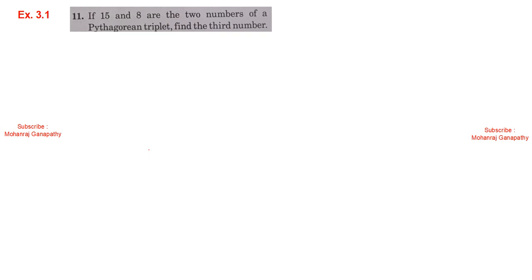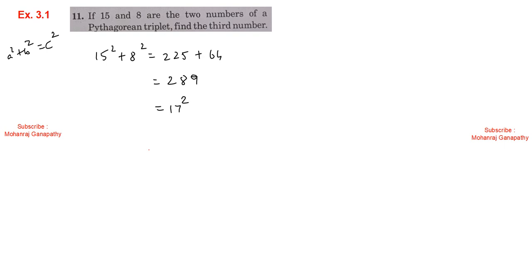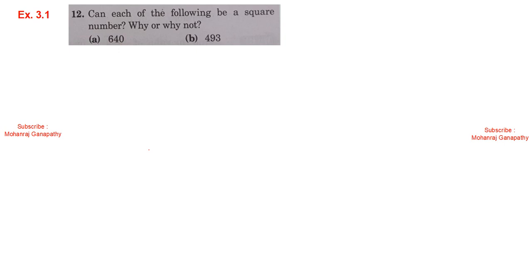Exercise 3.1, sum number 11: 15 and 8 are two numbers of a Pythagorean triplet. Find the third number. Using a squared plus b squared equals c squared: 15 squared plus 8 squared equals 225 plus 64 equals 289, which is the square of 17. So the third number is 17.